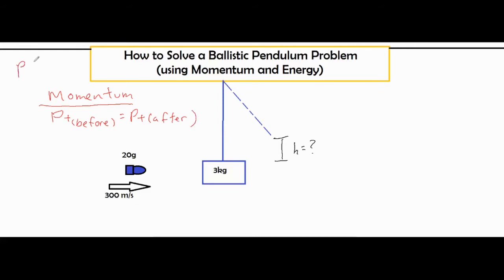And momentum which is represented by a lowercase p is just mass times velocity. So what we're going to do is we're going to take this 20 grams and divide it by a thousand so that we get 0.02 kilograms and we're ready to go because we have all of our initial values. We have the m and v for the bullet and we have the m and no v to start out with for the block.